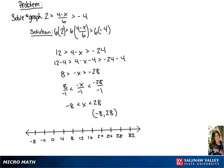To graph this, we are going to draw an open circle around negative 8 as well as 28. We are going to draw the line in between these two numbers, representing the fact that x falls somewhere between negative 8 and 28 but will not include negative 8 or 28.